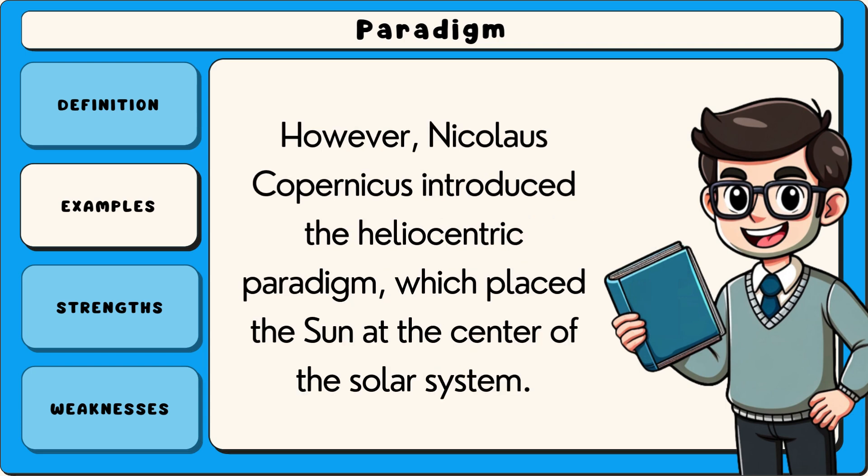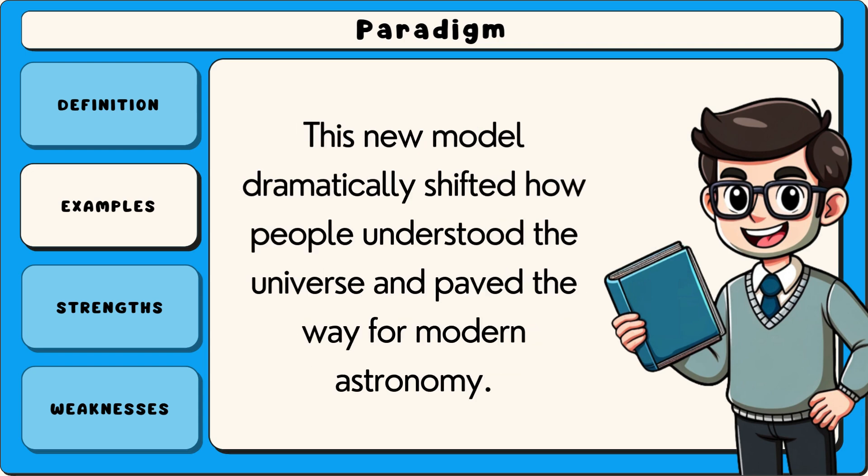However, Nicholas Copernicus introduced a heliocentric paradigm which placed the Sun at the centre of the solar system. This new model dramatically shifted how people understood the universe and paved the way for modern astronomy.